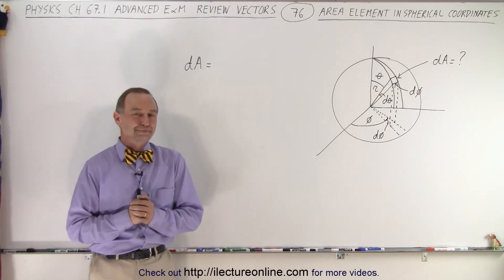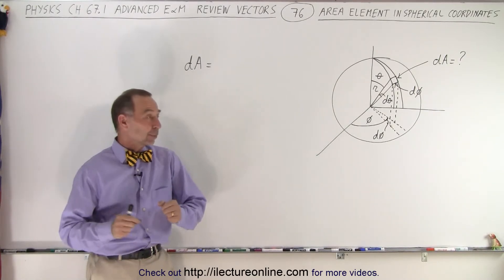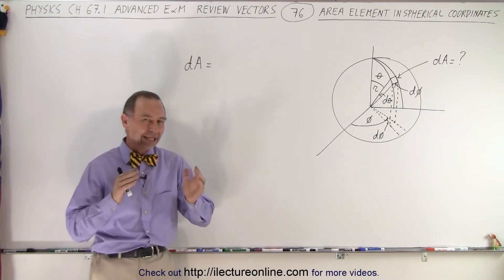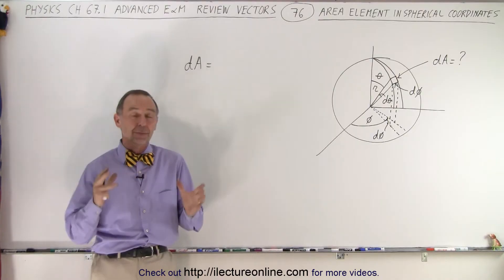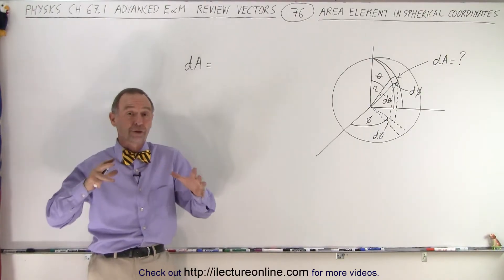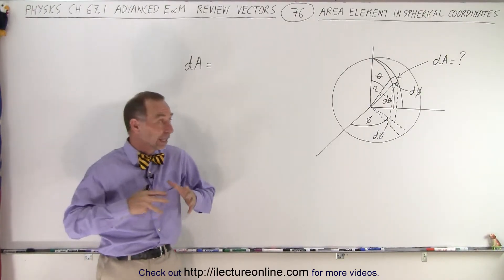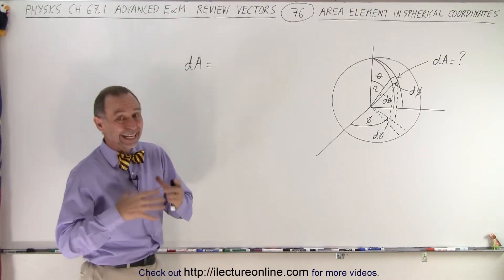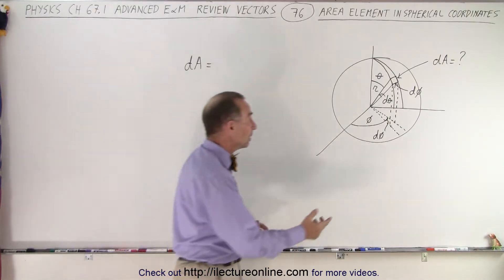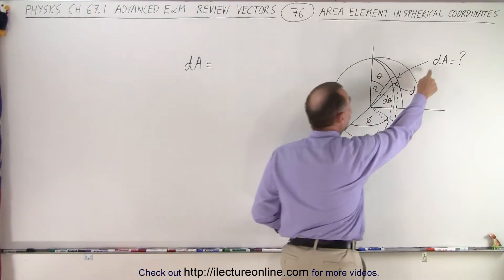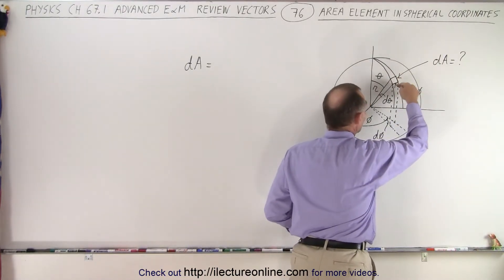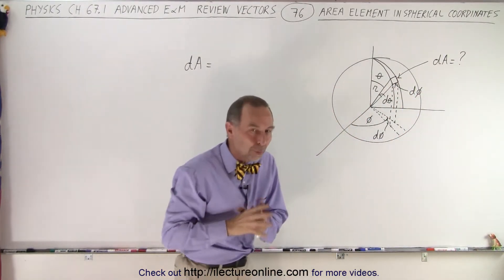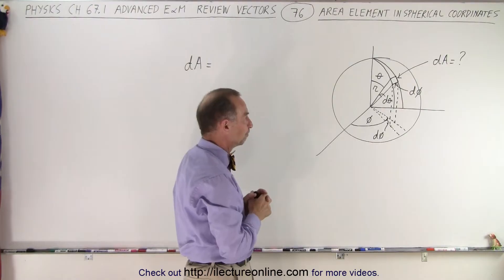Welcome to our lecture online. The next thing we're going to tackle is understanding an area element on the surface of a sphere in spherical coordinates. That area element would be called dA and it looks like it's approximately a rectangle.